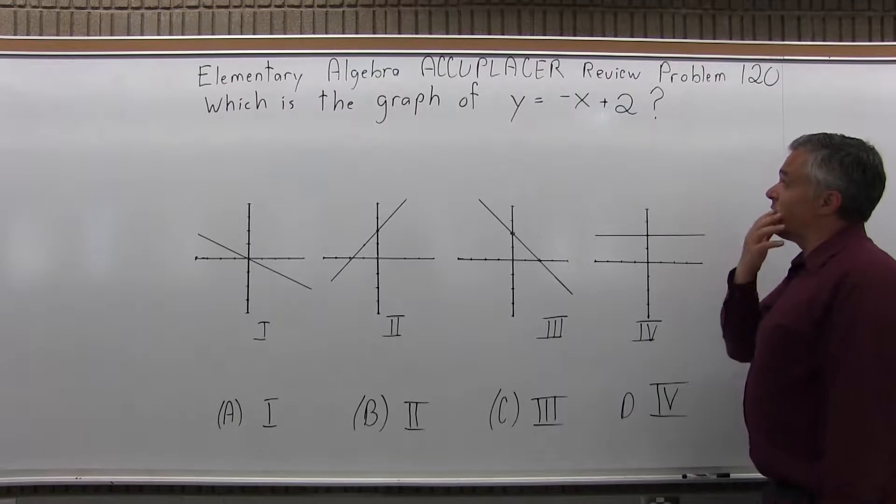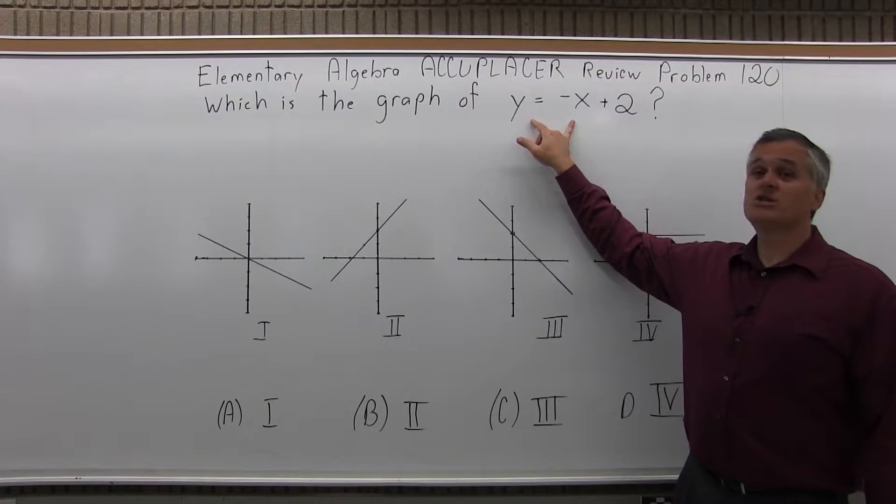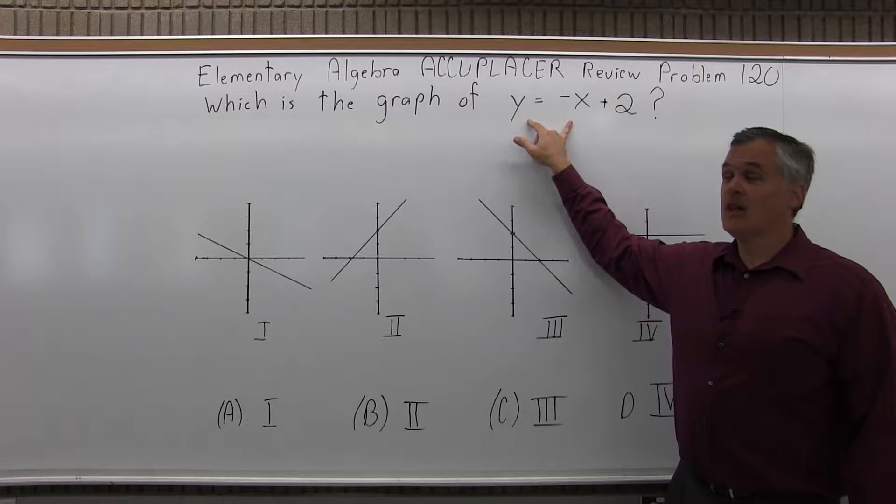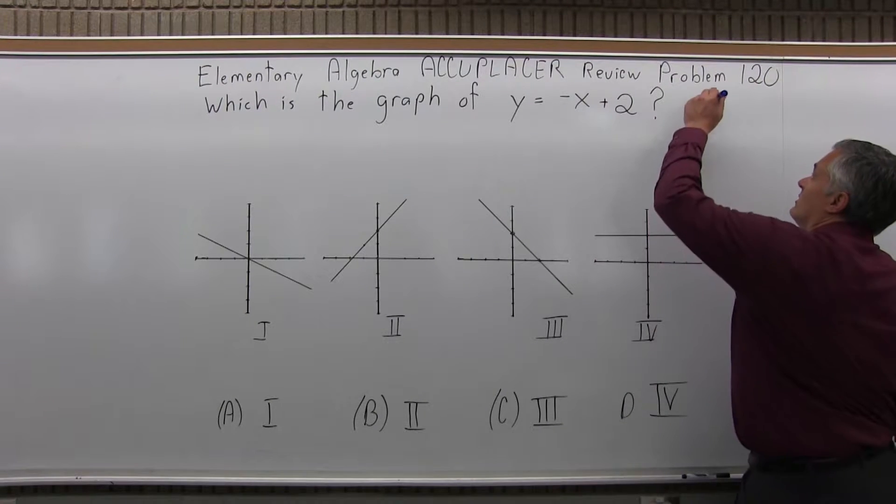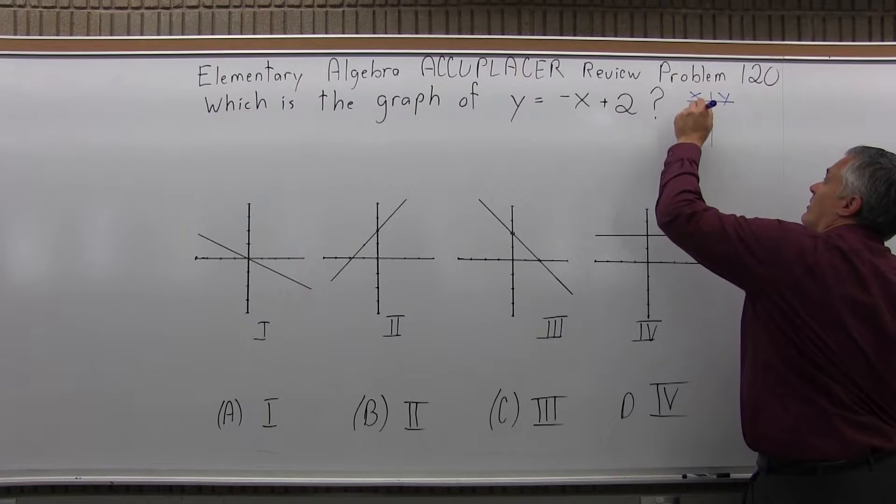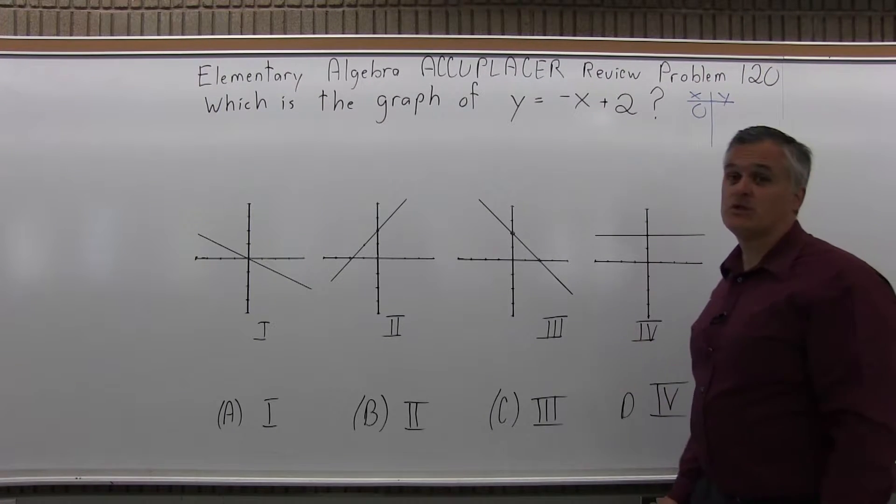So there's a couple of ways you can do this problem. One is keep in mind that any combination of x and y that makes this equation true is a point on the graph of the line. So if you're going to do that, I'll make a little chart next to it, x, y. What I like to do is zero one variable and solve for the other one.